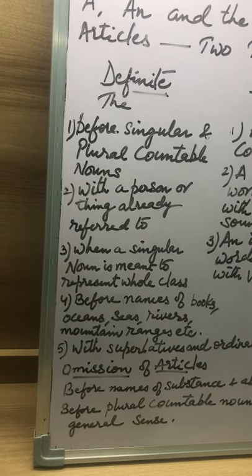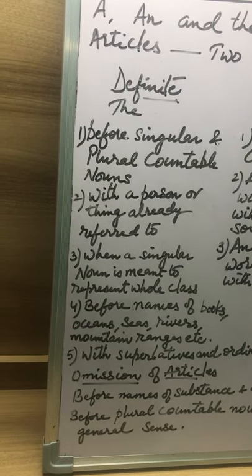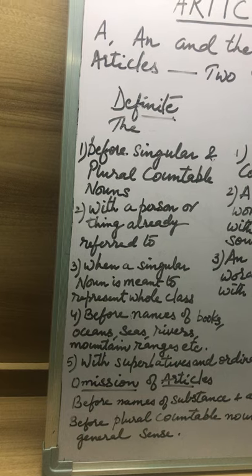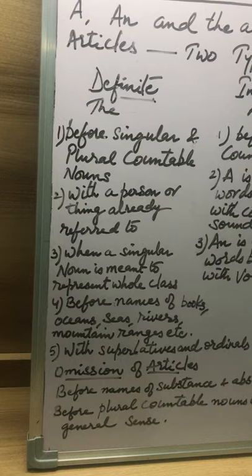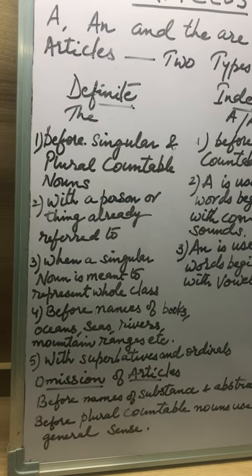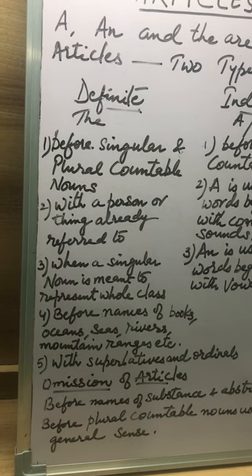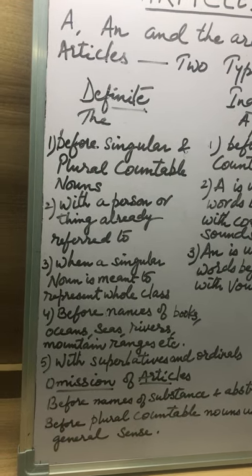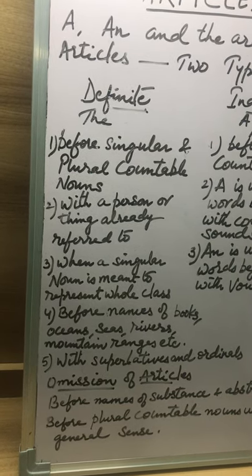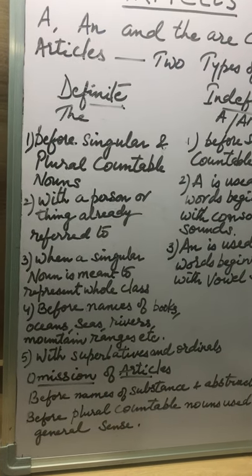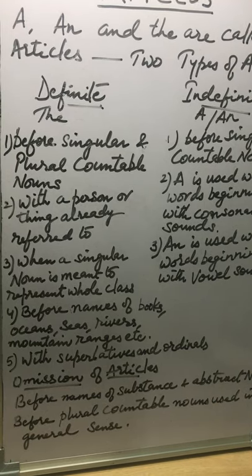Before words like school, college, church, bed, table, hospital, etc., when these places are visited for their primary purpose, 'the' is generally omitted. For example, 'I learnt French at school', 'we go to church on Sundays', 'my uncle is still in hospital'. So 'the' is generally omitted before such places when used in their primary sense.